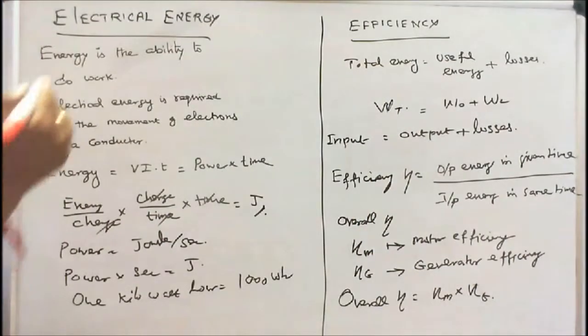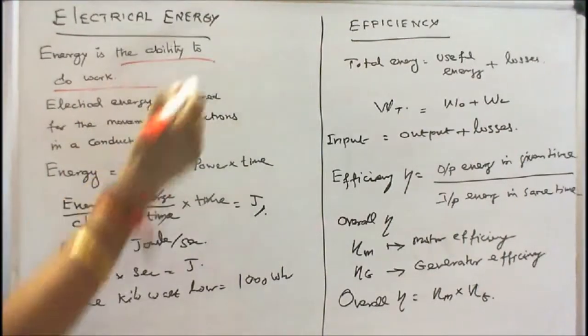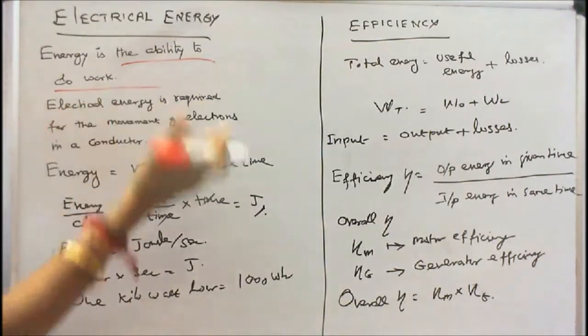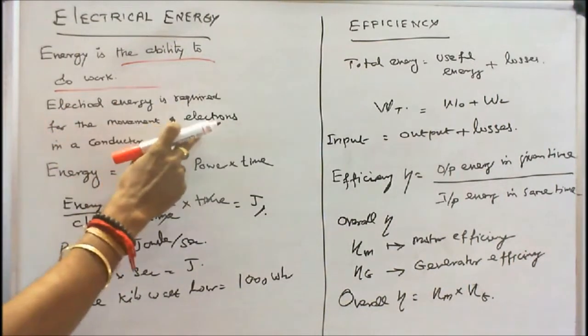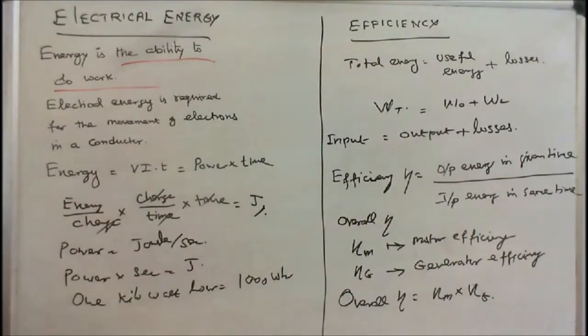So electrical energy - energy is the ability to do work. Electrical energy is required for the movement of electrons in a conductor. Energy equals V times I times T, where V times I is the power, power times time.